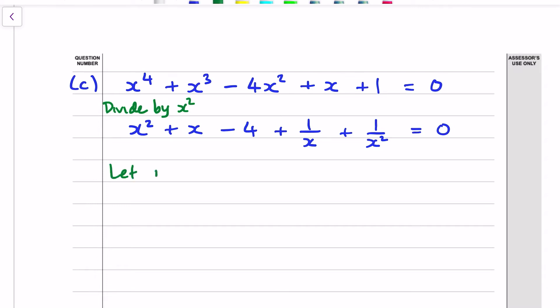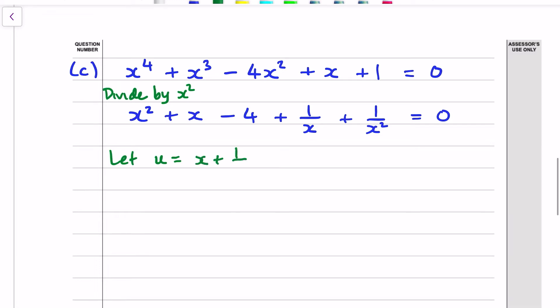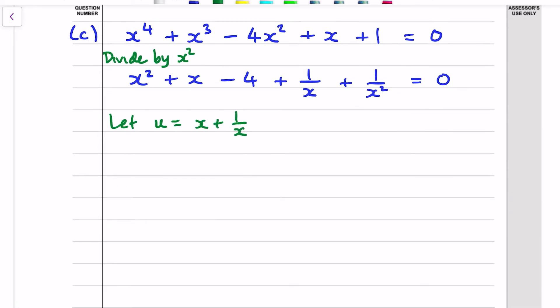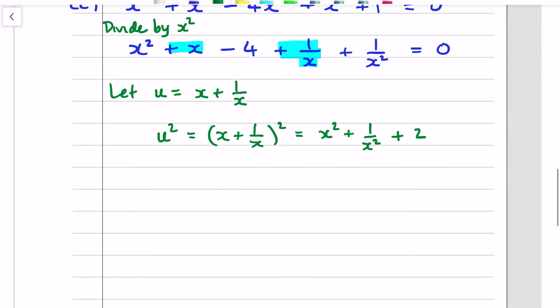So at this stage, if you go and let u equal to x plus 1 over x as a substitution we can see that that's appearing there x plus 1 over x. We've also got the x squared plus 1 over x squared business. So if we square this u that's x squared plus 1 over x squared plus 2 lots of x times 1 over x meaning that x squared plus 1 over x squared is u squared minus 2. Going back to the polynomial we've got u squared minus 2 the yellow stuff plus u, the blue stuff minus 4 equals 0 we have a quadratic.